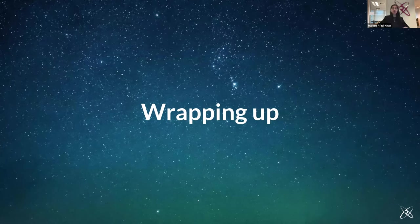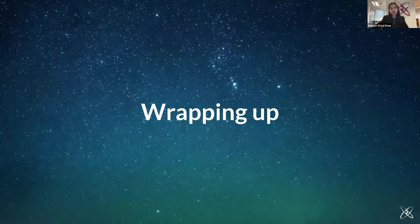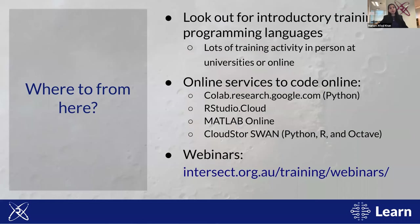That brings us towards the end of what we want to cover. Hopefully this gave you some idea of the paradigm shift between how humans think versus how computers think, and introduced key tools and concepts for writing computer programs. As a next step, keep an eye out for introductory programming courses in your language of choice. If you're from an Intersect member institution, you can access our training at your campus or online. There are also several free online platforms to start coding right away — Google Colab for Python, RStudio Cloud, MATLAB Online, and if you have access through your institution, SWAN for Python, R, and Octave.